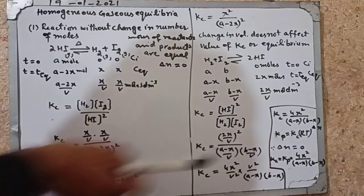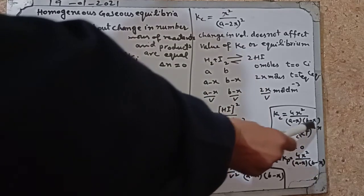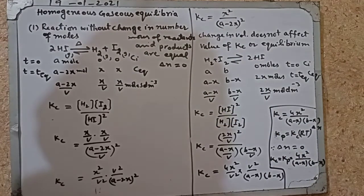Therefore Kc is equal to 4x square divided by a-x into b-x.